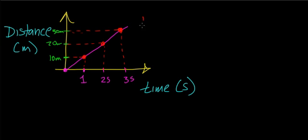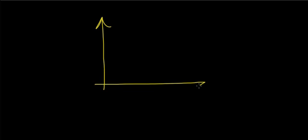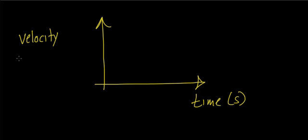This relationship is a linear relationship between distance and time for an object moving with constant velocity. Now another graph we can look at is the velocity versus time graph for an object traveling with constant velocity. On the x-axis I'll have time in units of seconds, and on the y-axis will be velocity in units of meters per second. For an object traveling with constant velocity, you'll see a nice straight line, and this means constant velocity.